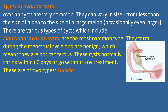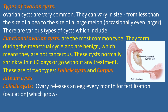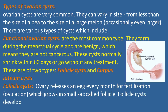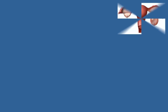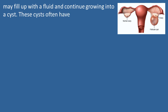Functional cysts are of two types: follicle cysts and corpus luteum cysts. Follicle cysts: the ovary releases an egg every month for fertilization — ovulation — which grows in a small sac called a follicle. Follicle cysts develop when a follicle does not open to release an egg. The follicle may fill up with fluid and continue growing into a cyst. These cysts often have no symptoms.